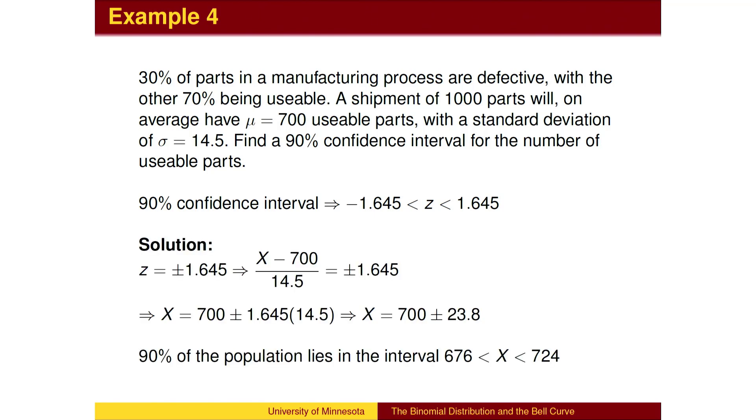The z-scores for the 90% confidence interval are plus and minus 1.645 standard deviations. So we find the values that are 1.645 standard deviations of 14.5 from the mean of 700. 90% of the shipments will have between 676 and 724 working parts.